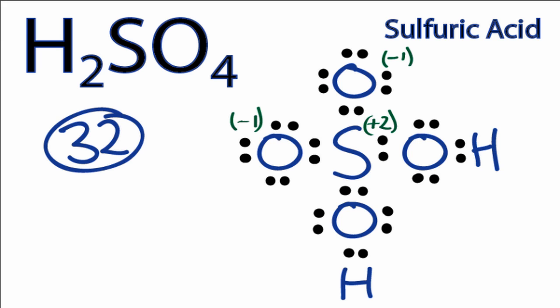It turns out that sulfur has a plus 2 formal charge, and each of these oxygens here have a minus 1. We'd like our formal charges to be as close to 0 as possible, so what we can do is form double bonds with the oxygens, the oxygens that don't have a hydrogen on them, and see how that works out with the formal charges.